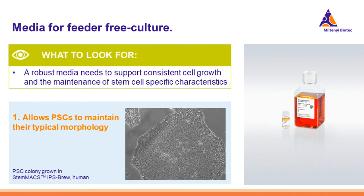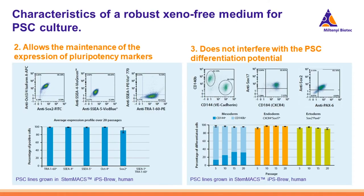So which cellular features should a good media support? Here you may see some data obtained from PSC lines grown in StemMACS iPS-Brew XF. First, a good media allows PSCs to maintain their typical morphology. Second, a robust media must support the continuous and stable expression of pluripotency-associated markers during culture. By doing so, it also allows the preservation of cells in a pluripotent state and does not induce a bias in the differentiation capabilities of our line.